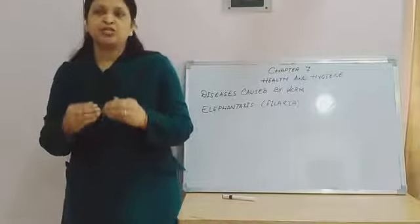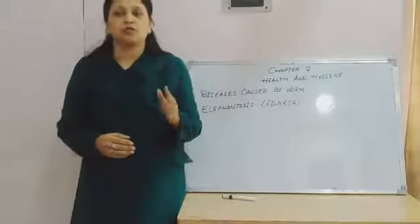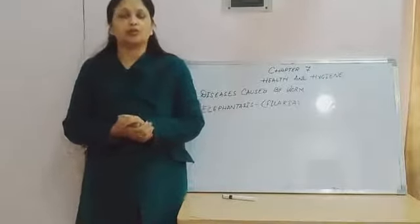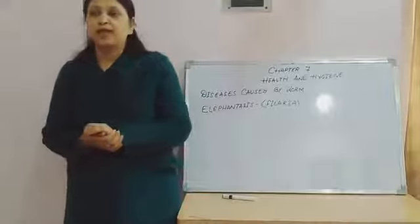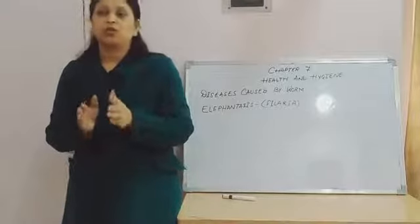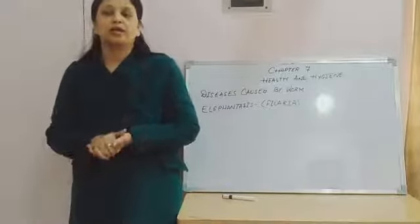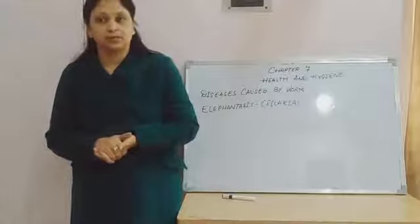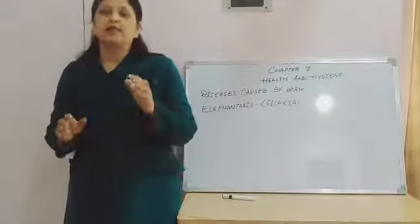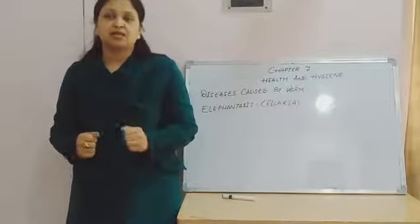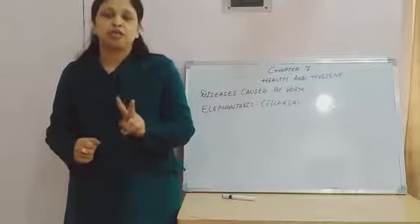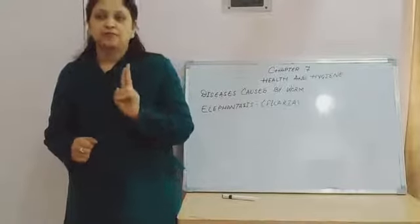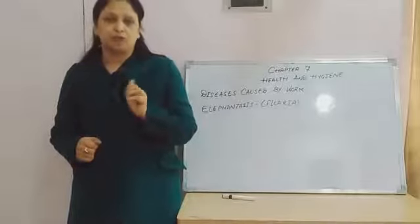Upon entering the body, the larva of the worm accumulate in an organ of the body and multiply, where they cause chronic inflammations of that organ. Depending upon the infecting parasite, there are two different kinds of filariasis that affect different parts of the body.